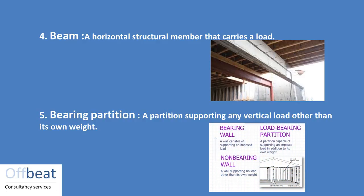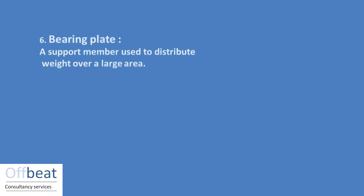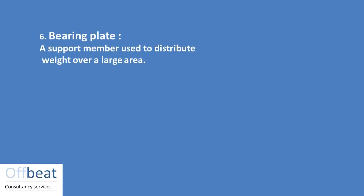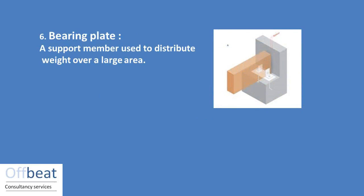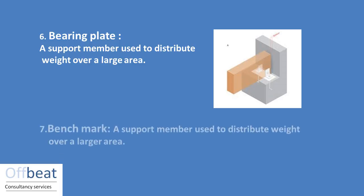There are two types of walls: load bearing and non-bearing. The load bearing wall supports the roof and other weight other than its own. Next is bearing plate: any member which is used to distribute the weight over a large area is known as the bearing plate.